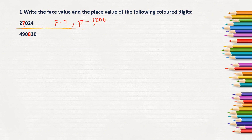Next, the second number is 4,90,820. Here, 8 is in red color. The face value of 8 is 8 itself, and the place value of 8 is 800.